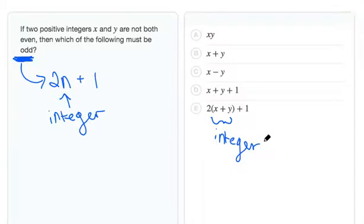So we actually don't need to pick numbers for x and y. We know that the answer is E. No matter what our x and y are, this product and then plus one will definitely result in an odd number. It must be odd.